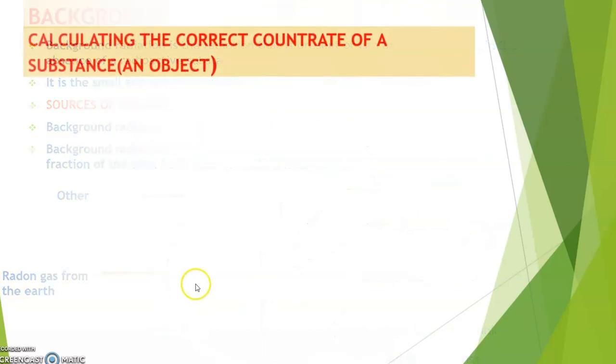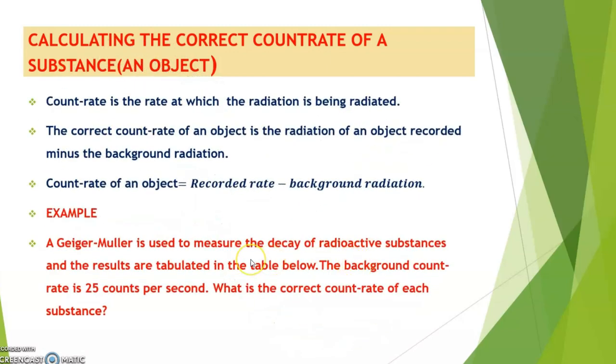Now, how do you calculate the correct count rate of a substance or an object? The correct count rate of a substance or an object is given by the equation: Count rate of an object equals recorded rate, that is, recorded count rate, minus background radiation.